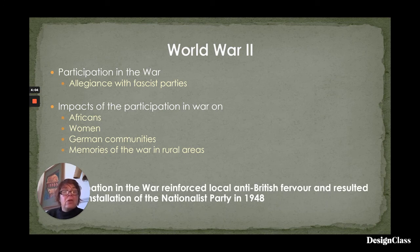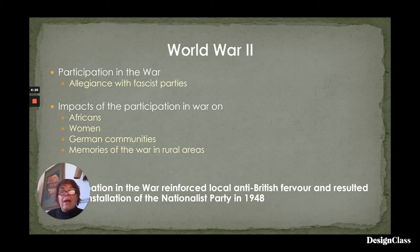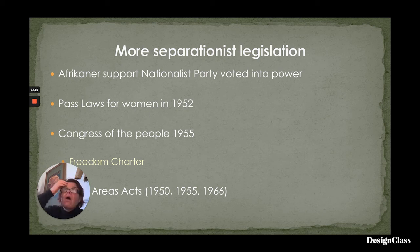Participation in the war reinforced local anti-British fervour, and this resulted in the installation of the Nationalist Party in 1948. Basically, because Jan Smuts had been so focused on participating in England's war, the nationalists literally swept in and when he wasn't looking, took over the rule of the country. This 1948 moment really brought in the really big swathe of separationist legislation — the tip of the iceberg of legislation which promoted white people over black, Indian, coloured, and others.